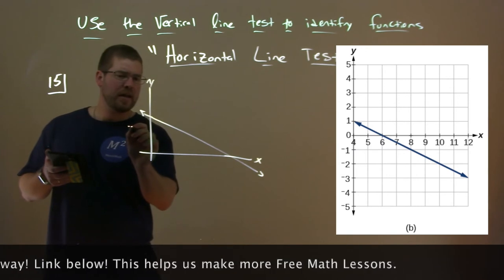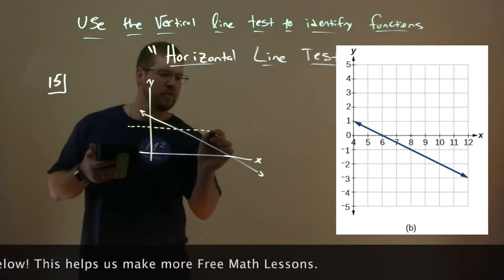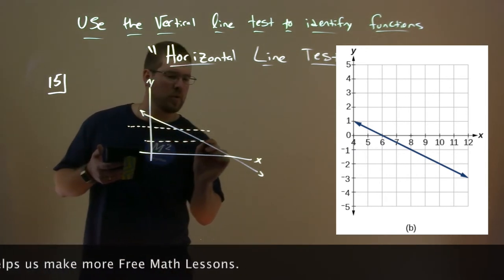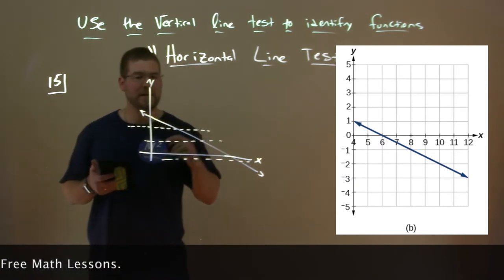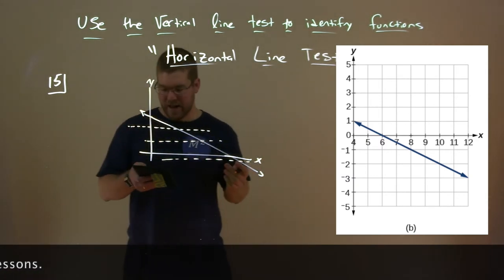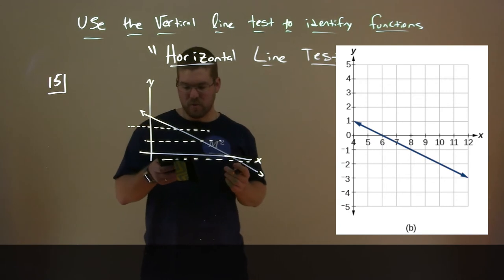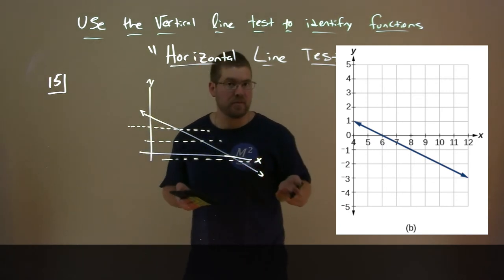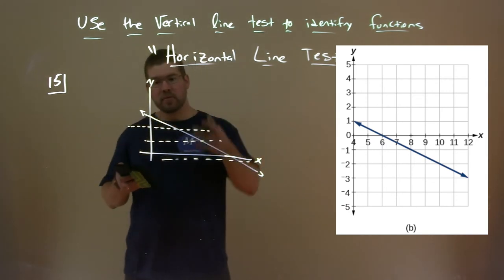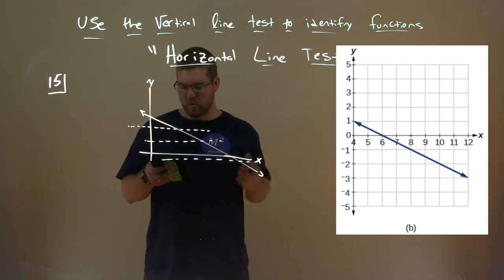Well, look at any horizontal line that we draw. We would only touch this function once for each one. So therefore it actually passes our horizontal line test there, meaning that this function, whatever it is, is one-to-one.